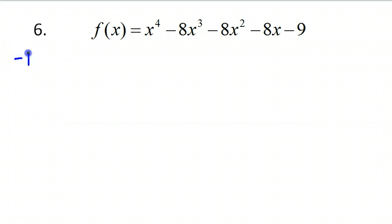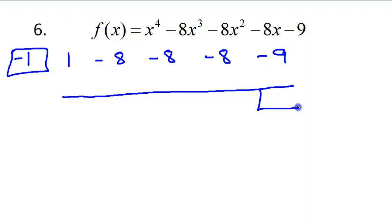So I've got negative 1. And there's 1, negative 8, negative 8, negative 8, and negative 9. That's a lot of negative 8s. That's going to be 1, negative 1, negative 9, positive 9. 1, negative 1, negative 9, positive 9. Zero. But look, I'm seeing a pattern.